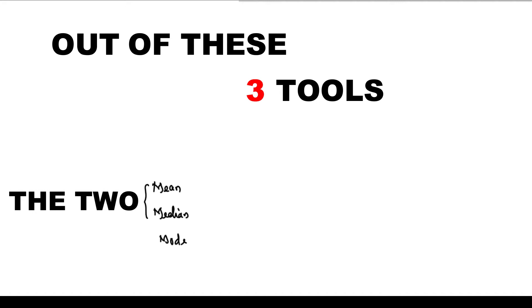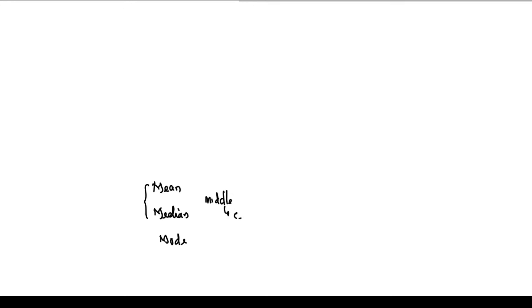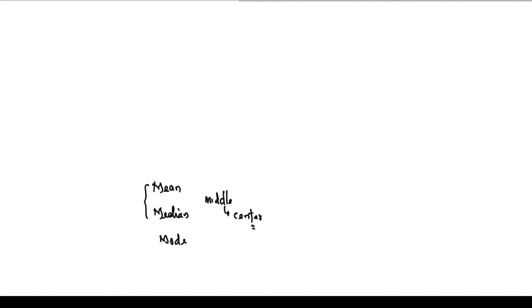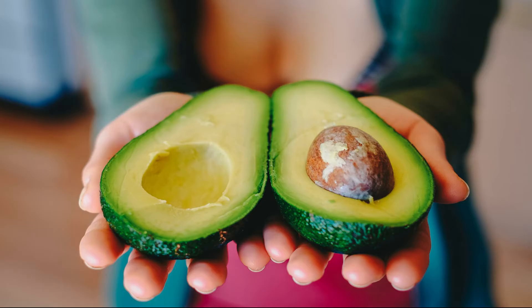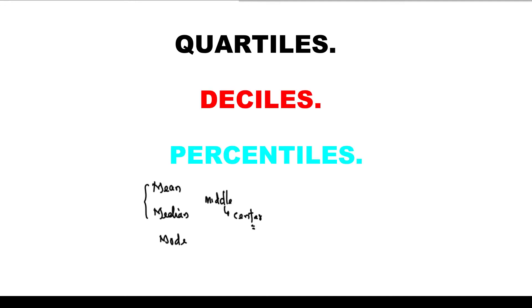Out of these three tools, the first two — the mean and the median — actually tell us about the center value of our distribution. As much as the middle value is important in statistics, it helps us divide our distribution into two equal halves: the first 50% and the second 50%. There are other ways we can divide distributions in statistics, and this is where the concept of quartiles, deciles, and percentiles comes in.